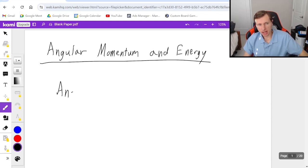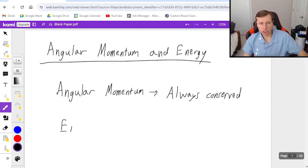In other words, angular momentum we're going to say is always conserved and then for energy, either kinetic energy or rotational kinetic energy or whatever, we're going to say that's not conserved for these problems.